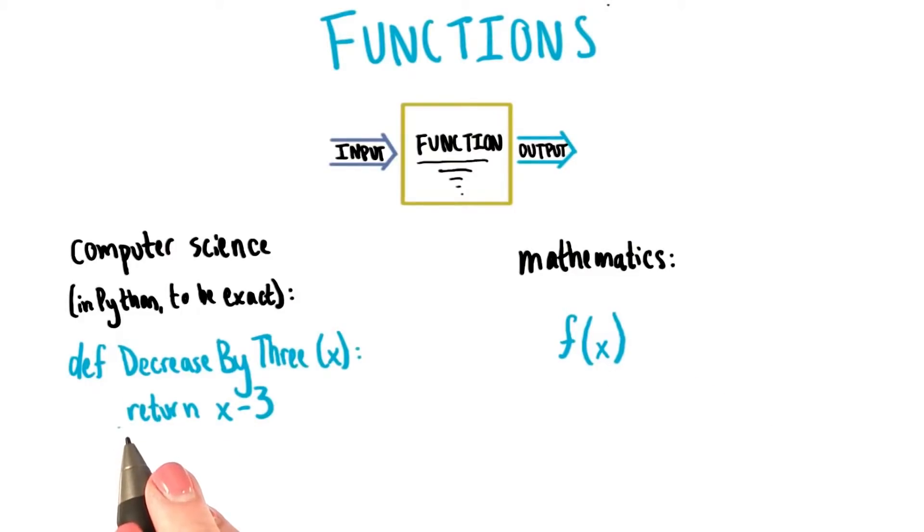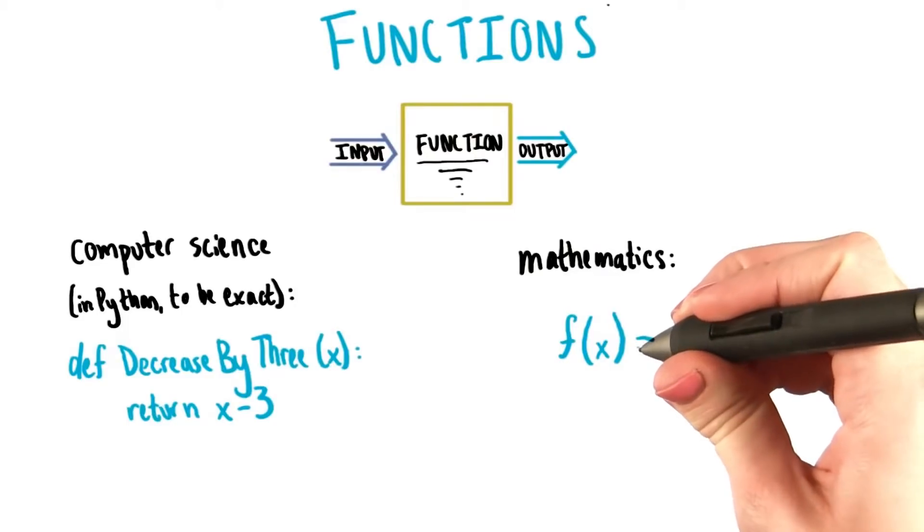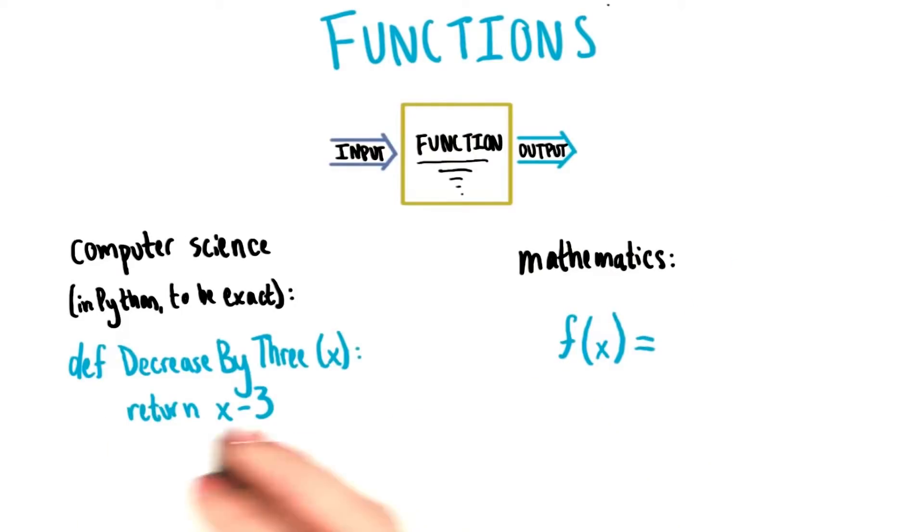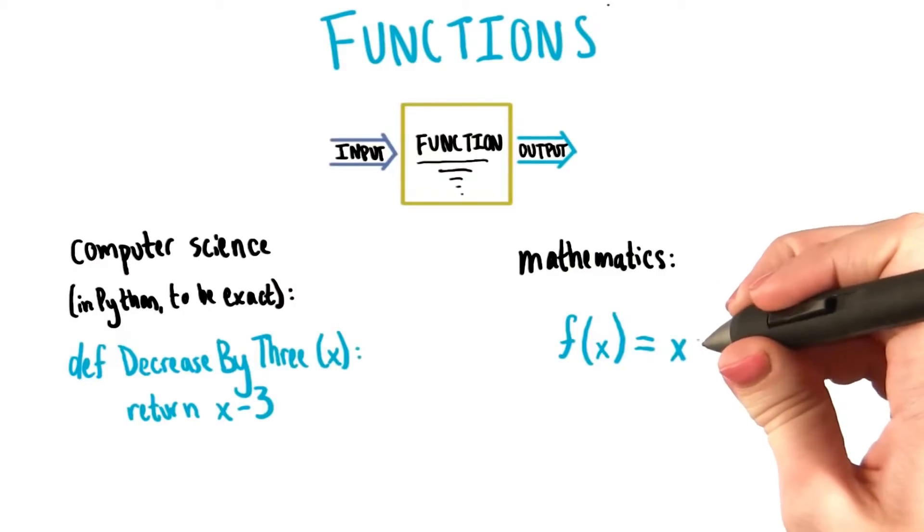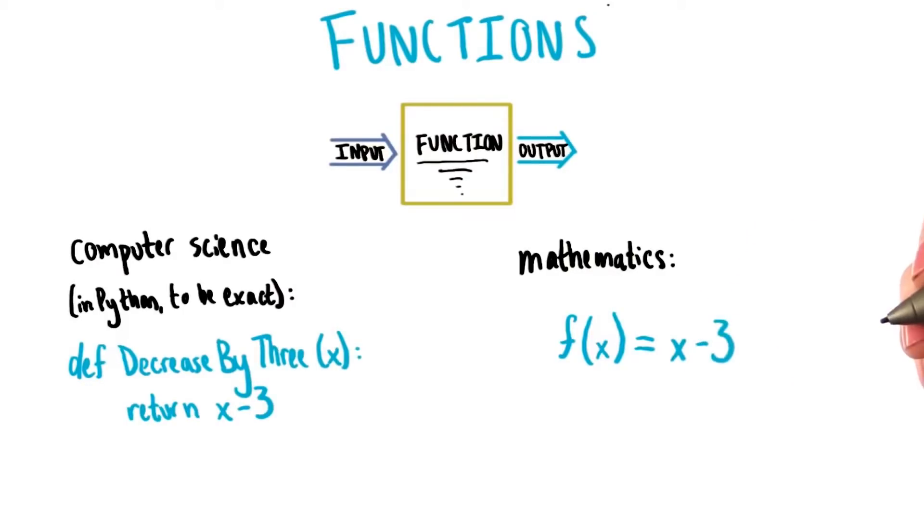Now, the programmer has a return statement that represents what the output of this function's going to be when we run the program. But in math, we just create an equation. So if we want to create the decrease by 3 equation in math instead, we just write f of x equals x minus 3. The output is just that expression that we've often seen written to describe the dependent variable, showing how it depends on the independent variable.